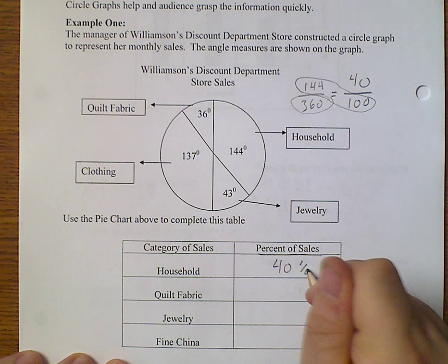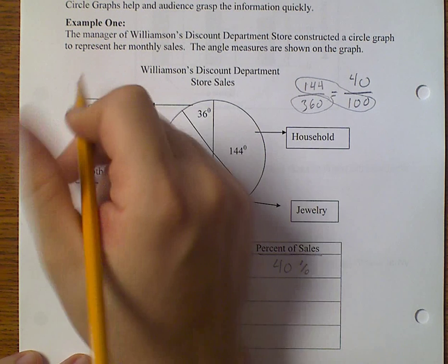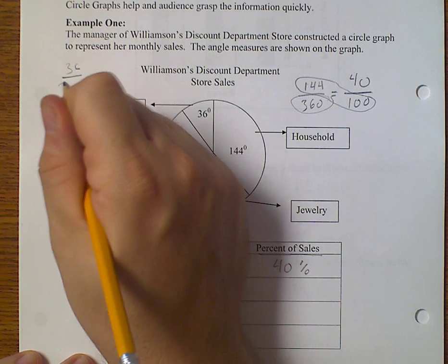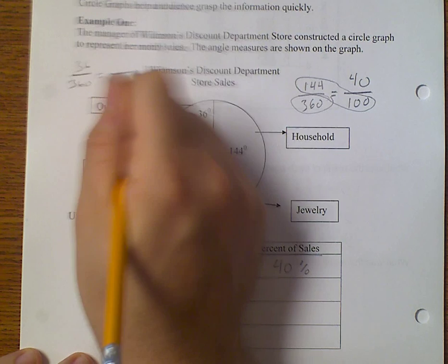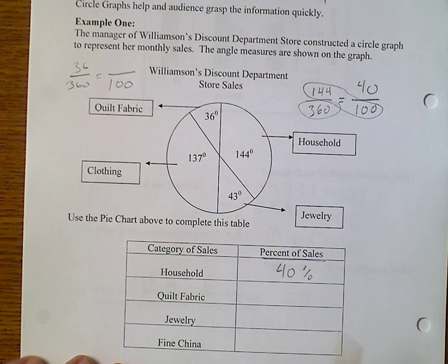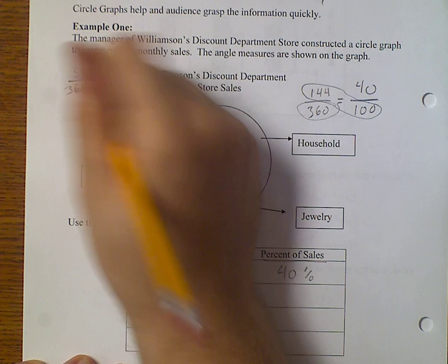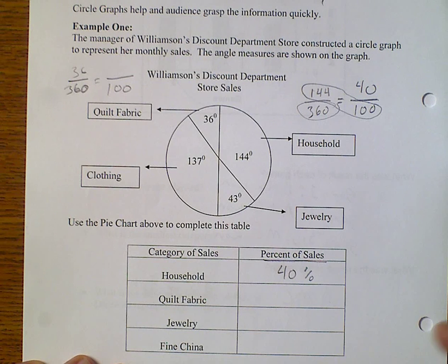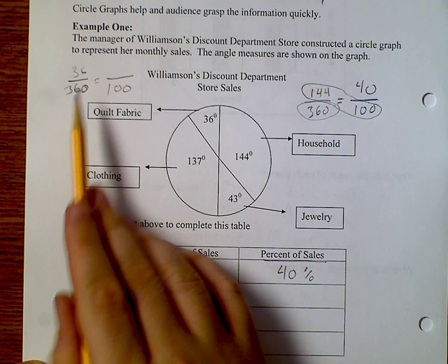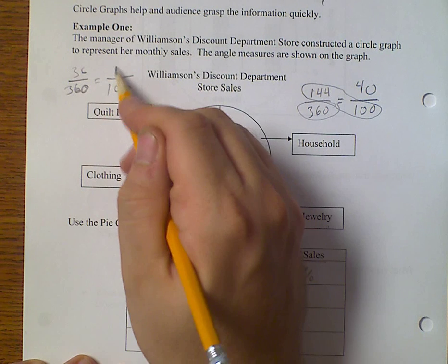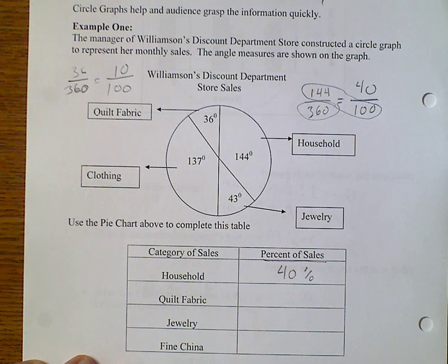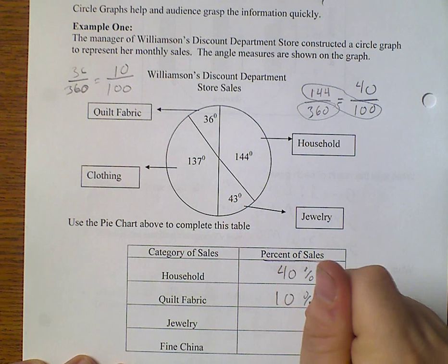Our quilt fabric, that would be 36 over 360 equals what over 100? I could cross multiply and divide to find this out again. But 36 over 360, I know is 10 over 100. That's 10%.